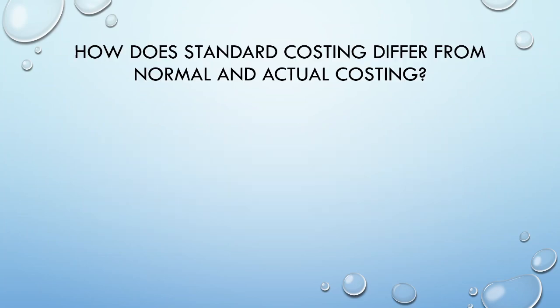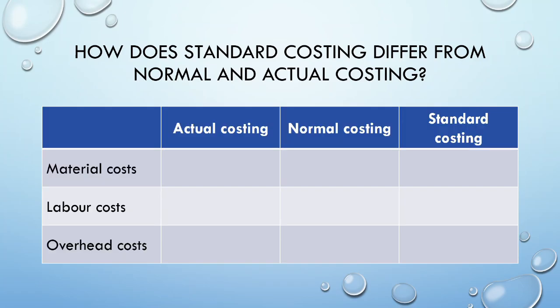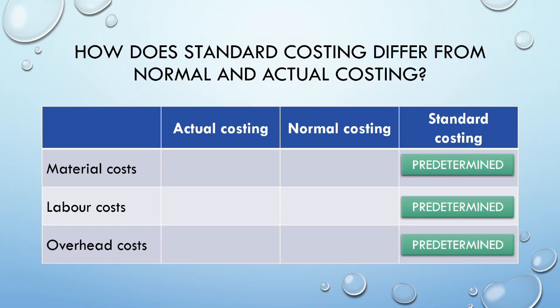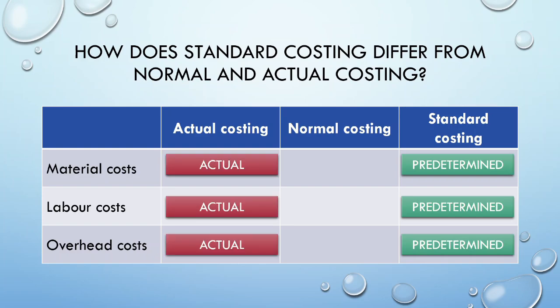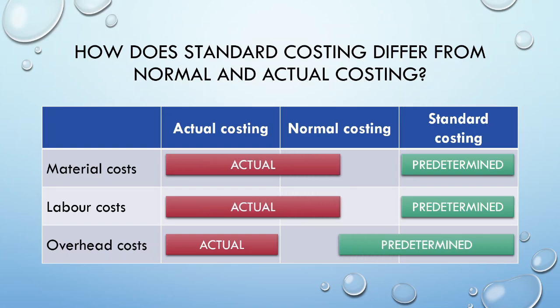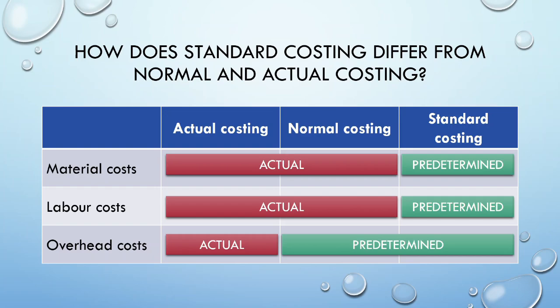A standard costing system uses a predetermined cost for materials, labour, and overheads. An actual costing system uses the actual cost of materials, labour, and overheads. A normal costing system uses actual costs for the direct items of materials and labour, but uses predetermined costs for the allocation of fixed overheads, which is why we get an under or over recovery.